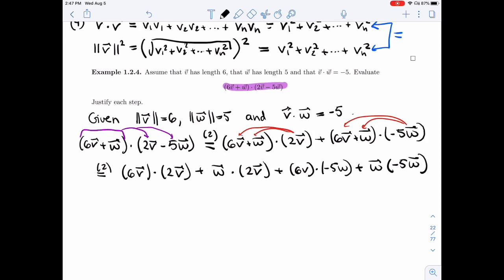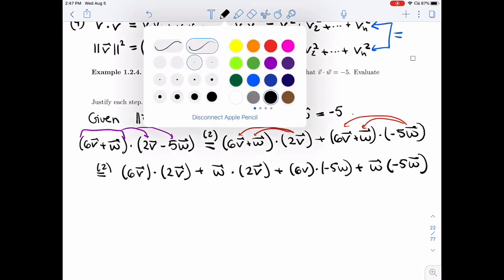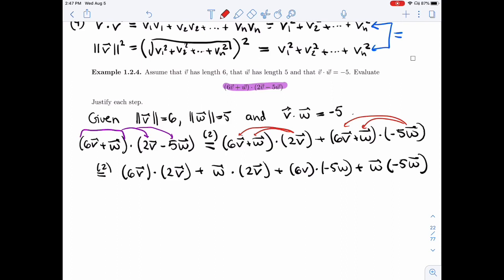In that last line, there is a mistake, a notation mistake. Let me fix it in red. Here in the last term, I have W times. That doesn't make sense. I don't know what it means. I need to know which product I'm using. In this case, we've been talking about the dot product, so I need a dot every time. All right? So it's W dot product with minus 5W.